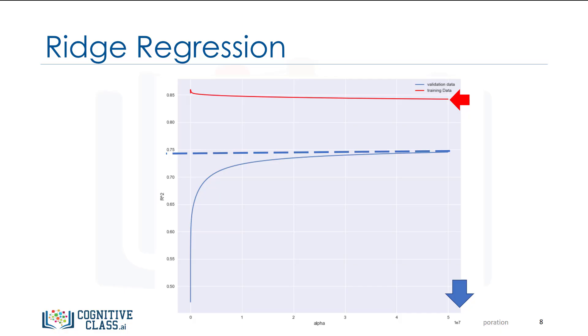Conversely, as alpha increases, the R squared on the test data decreases. This is because the term alpha prevents overfitting. This may improve the results in the unseen data, but the model has worse performance on the test data. See the lab on how to generate this plot.